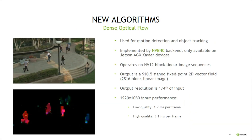Now on to the new dense optical flow. It's used for motion detection and object tracking. Currently, VPI only implements it on the new NVENC backend, which is available only on Jetson AGX Xavier devices. There are some caveats though: the output resolution is one-fourth of the input, and only NVENC block linear image sequences are supported.